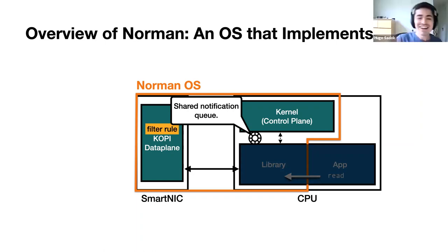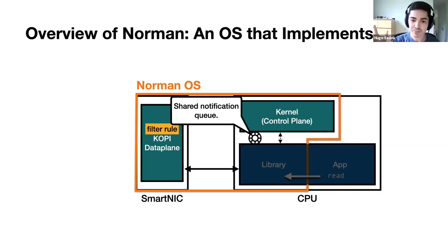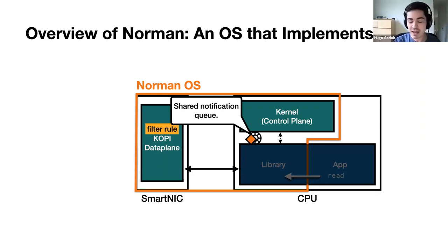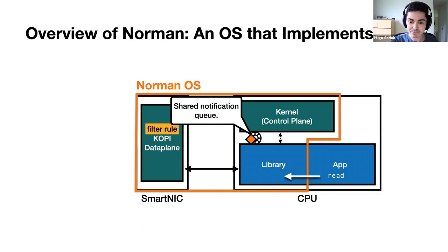If there is no data, the library transfers control to the kernel, which is then responsible for monitoring the notification queue. When data finally arrives, the kernel wakes the application right away and then we continue from there. That's how we enable blocking IO with this design.